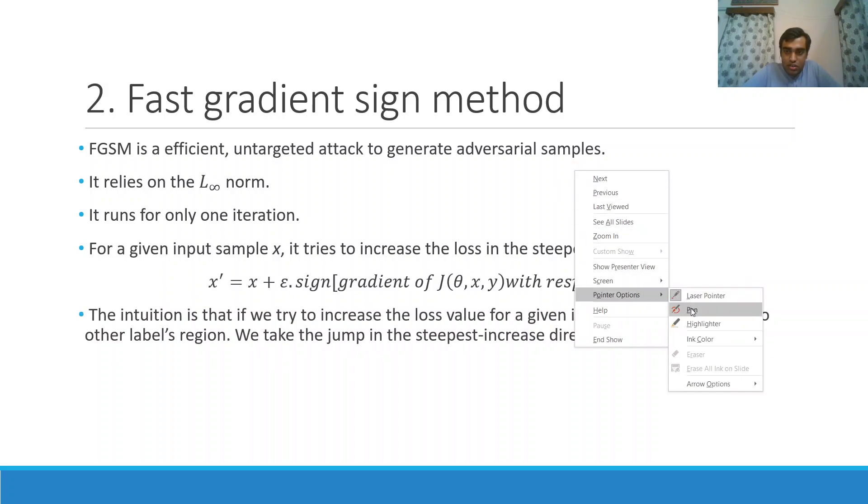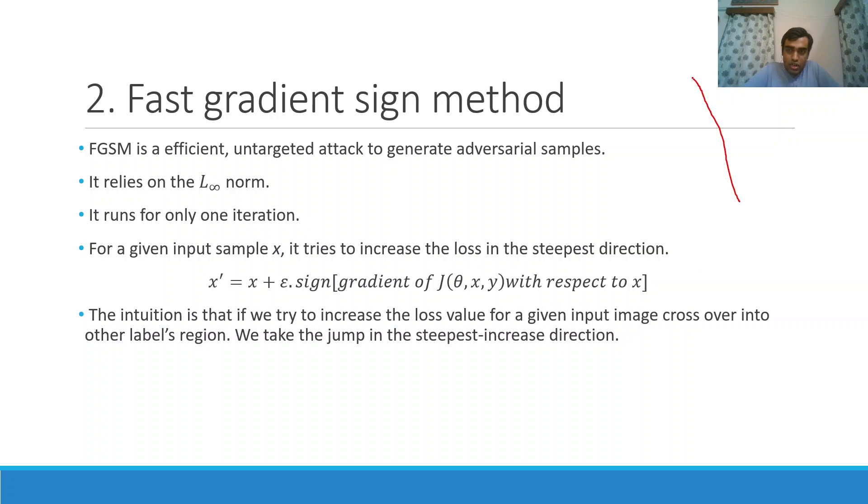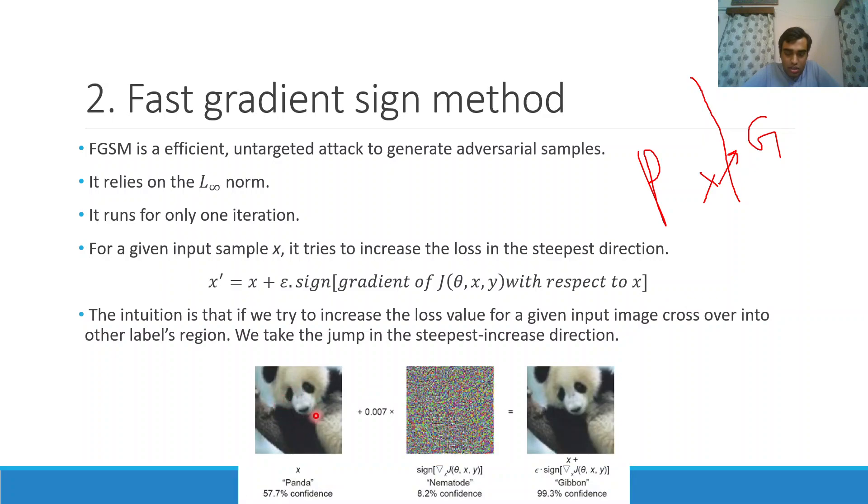The main intuition is that if we take a jump good enough, then we may land into the region of some other class. Let's say this is a region of panda P and this is the region of gibbon G and we are here at x. So if we take a good direction and increase, we may take a jump good enough to cross into the other region. Here's an example: this is a panda classified as a panda with 57.7% confidence, and we add a noise found by using this FGS method. Now the resulting image, which is indistinguishable to the human eyes, is classified as a gibbon with 99.3% confidence.